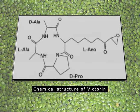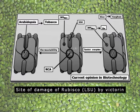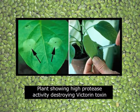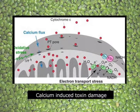Certain oat plants are not invaded by this particular toxin. Victorin primarily inhibits the large subunit (LSU) of Rubisco, the main enzyme for the dark phase of photosynthesis. Some plants which are resistant can produce a particular protease which will destroy the toxin, preventing disease development. At the same time there is an important role of calcium: if calcium is present in the cell the effect of victorin will be more, and if calcium is less then disease development will be reduced. So we can actually alter the disease by the presence or absence of calcium.